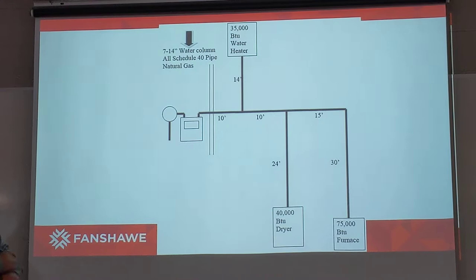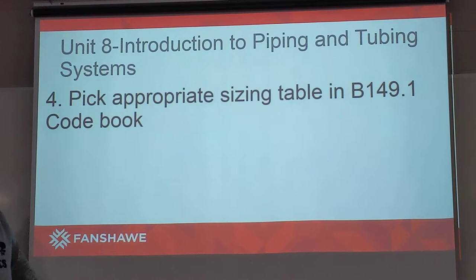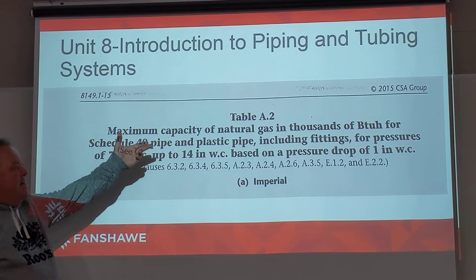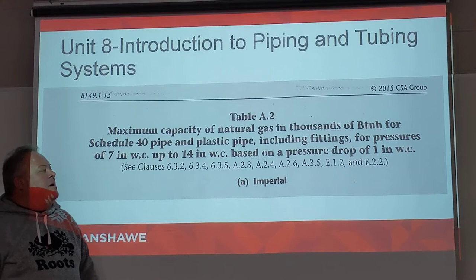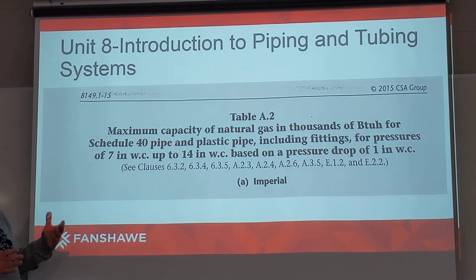Back to our diagram, you can see a block arrow showing all the information needed to pick our table. The next step is picking the appropriate table in the B149.1 code book. The table we come up with is Table A2. Reading through that header: the maximum capacity of natural gas in thousands of BTUs per hour for schedule 40 pipe and plastic pipe, including fittings, for pressures of 7 inches up to 14 inches water column, based on a pressure drop of 1 inch water column. A lot of students have problems picking the right table — make sure you're on the correct one. There's nothing worse than doing the whole piping example perfectly but using the wrong table, because you'll get the wrong answers and no marks.